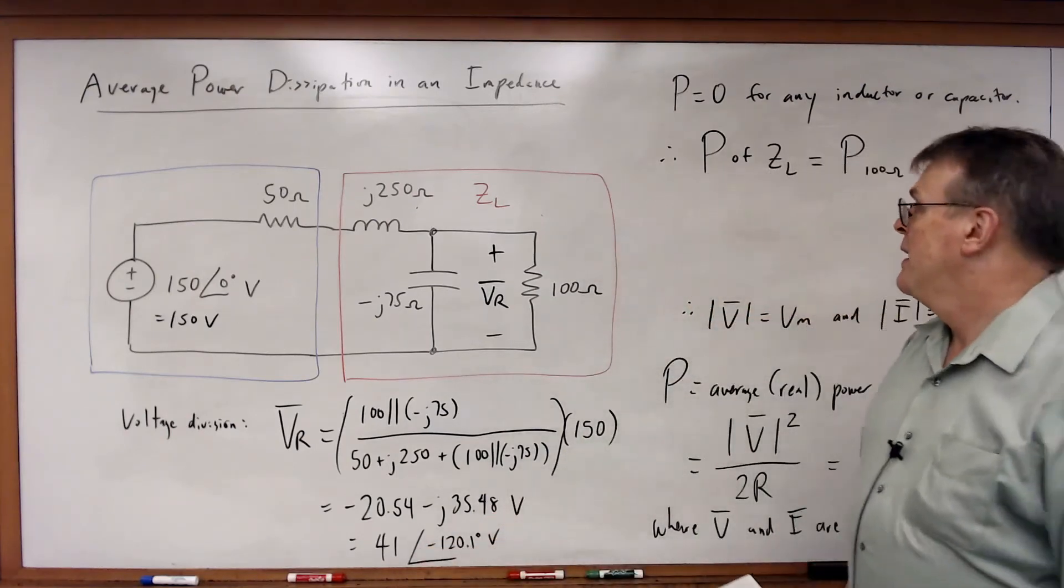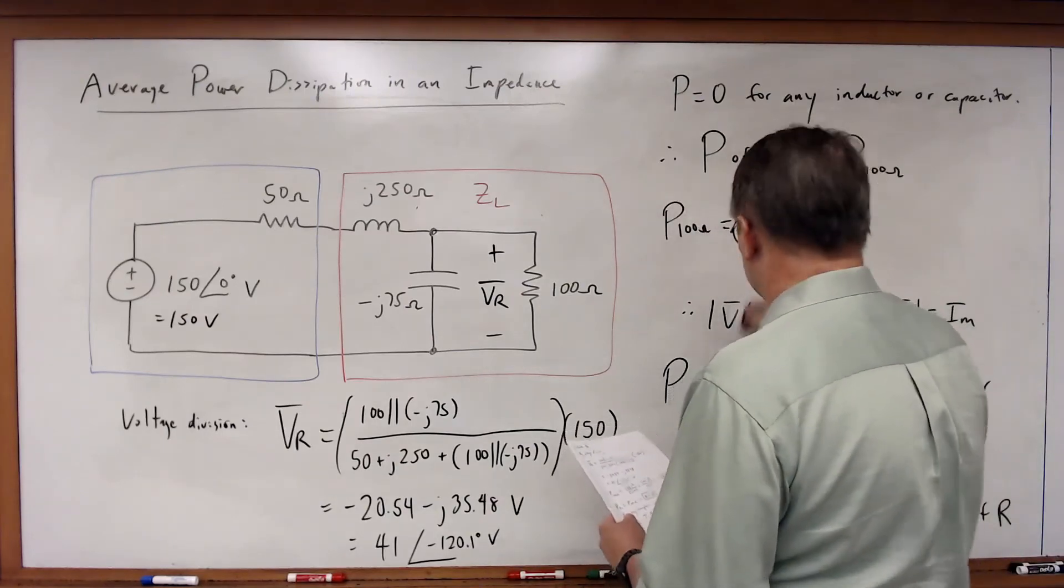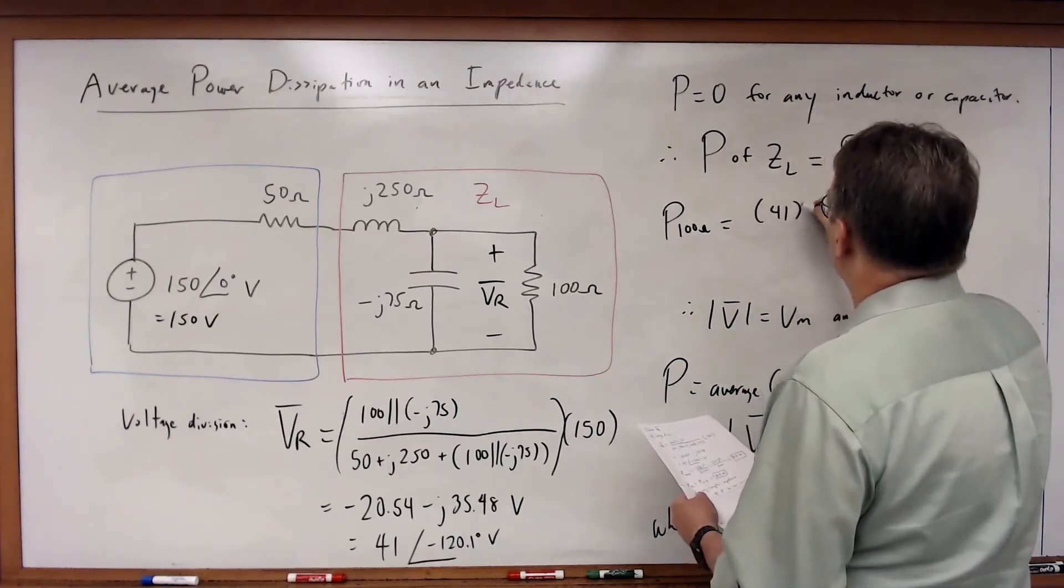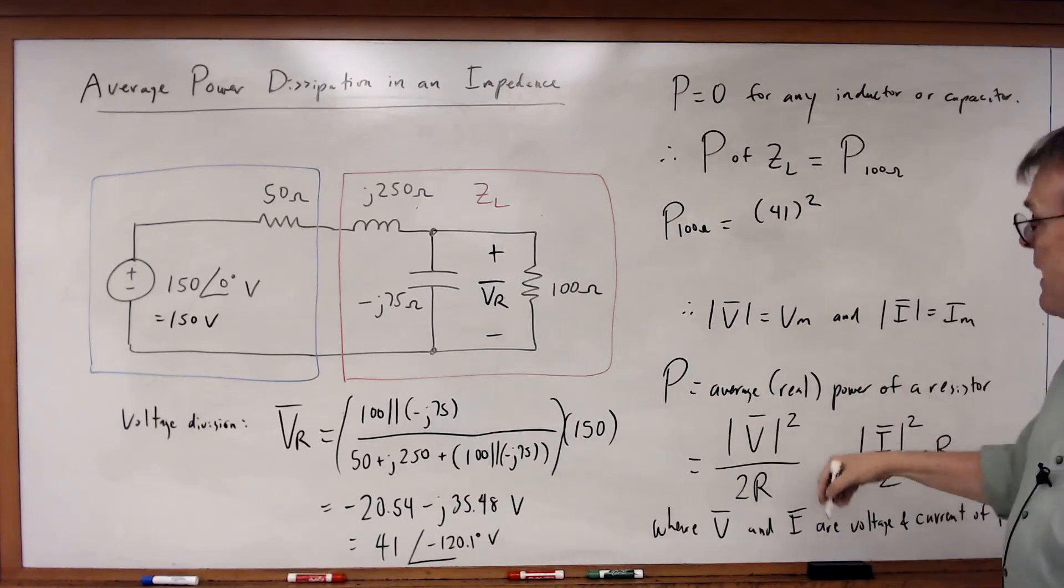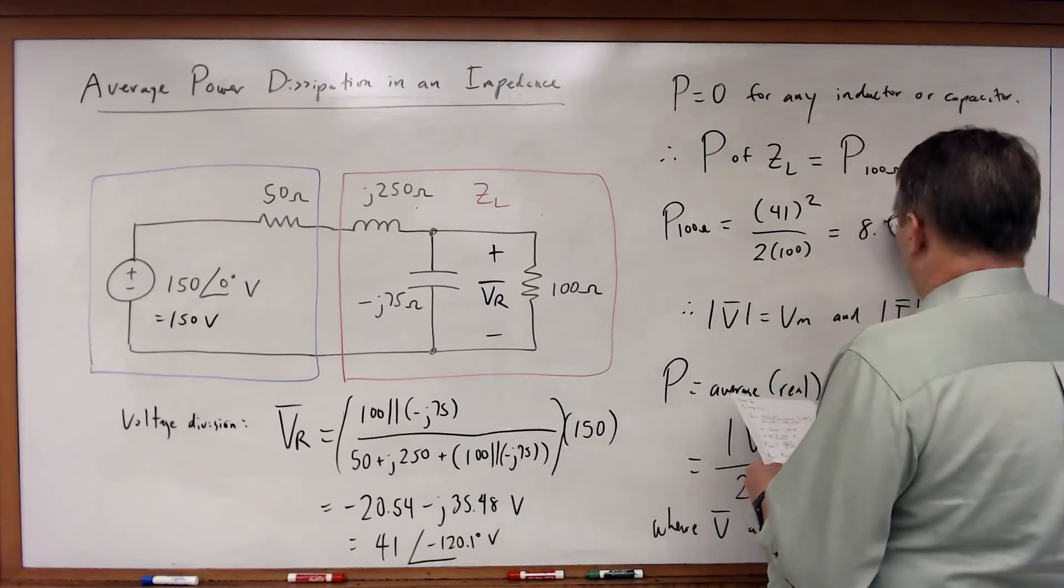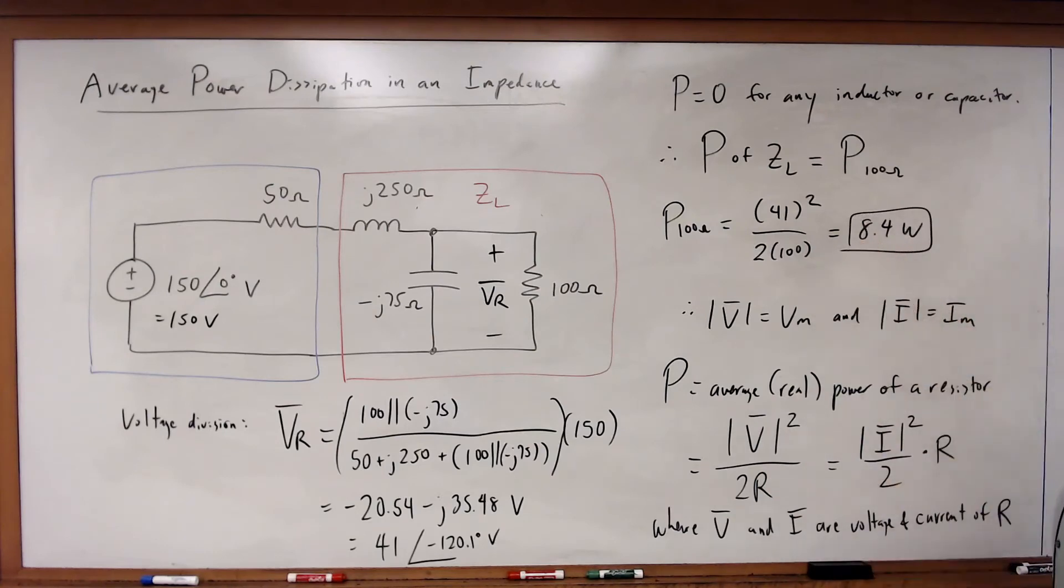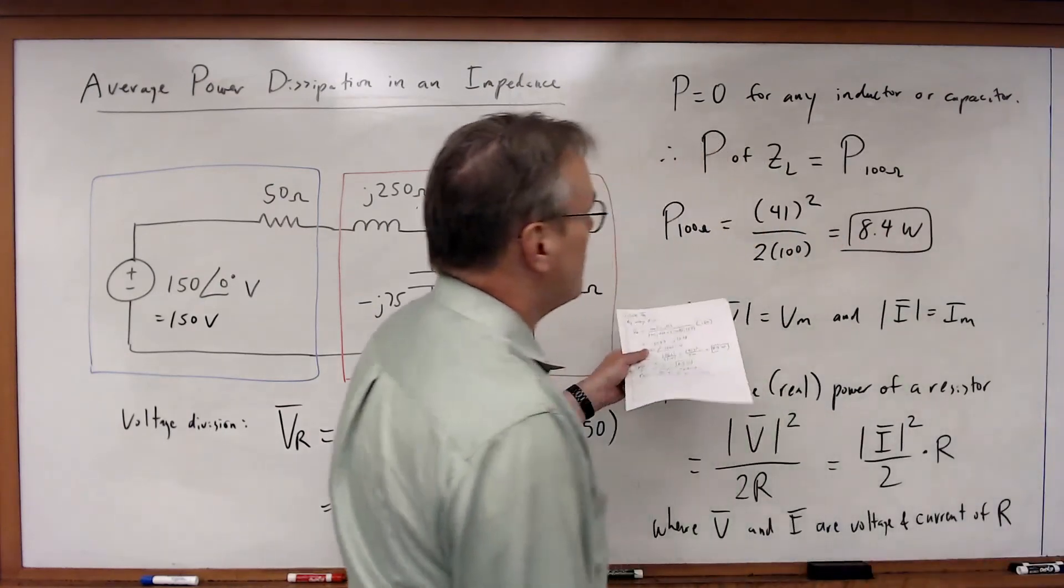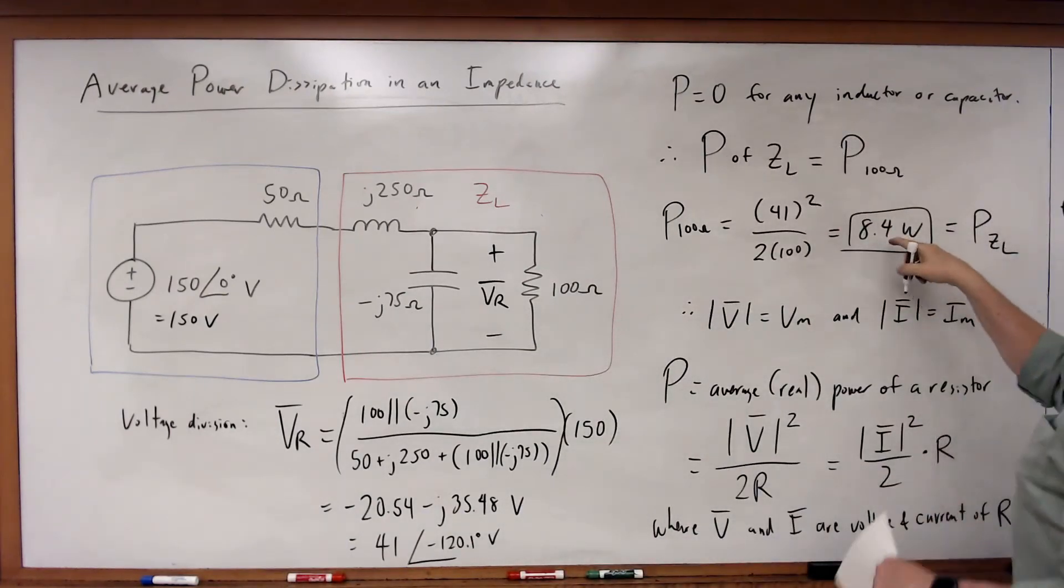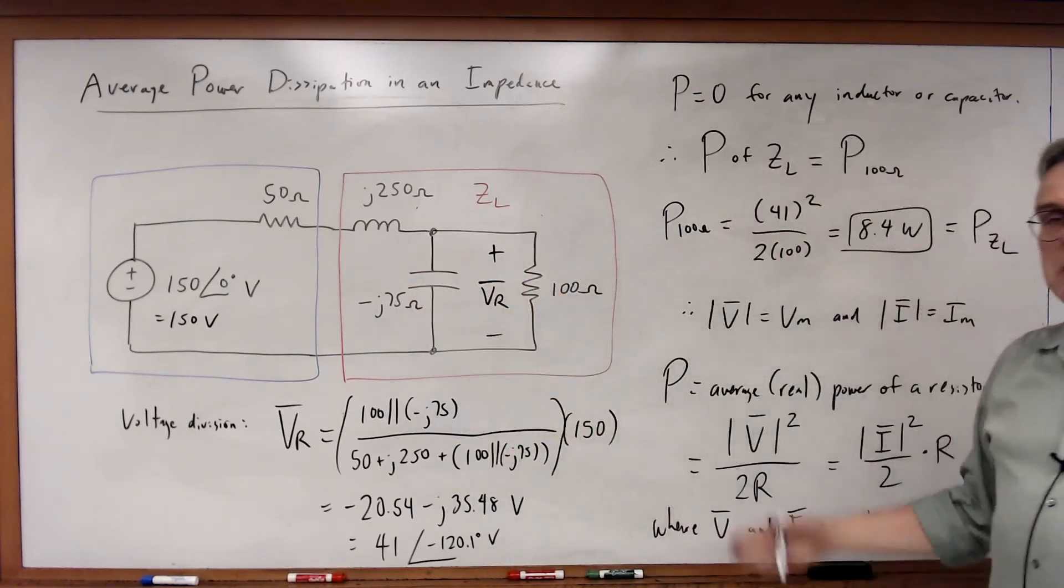There's the magnitude. Therefore, what we get is that the power of the 100 ohm resistor is simply going to be equal to 41 squared, the voltage phasor magnitude, divided by 2 times 100, which will be equal to 8.4 watts. Therefore, the power of Z sub L of the entire load is also equal to 8.4 watts because we know that the average power of the capacitor and inductor must be equal to zero.